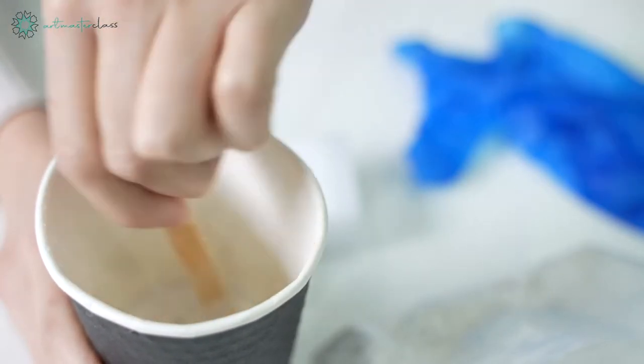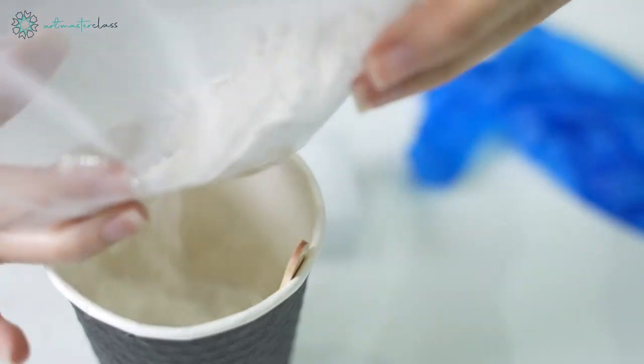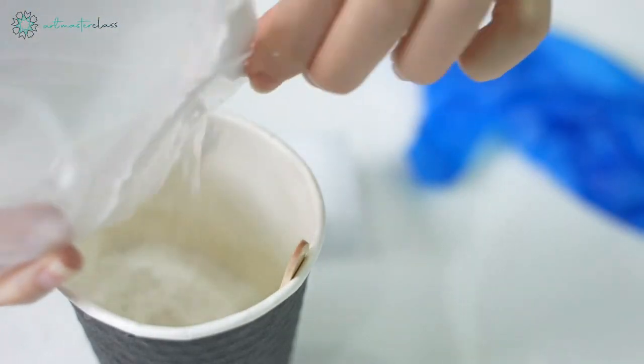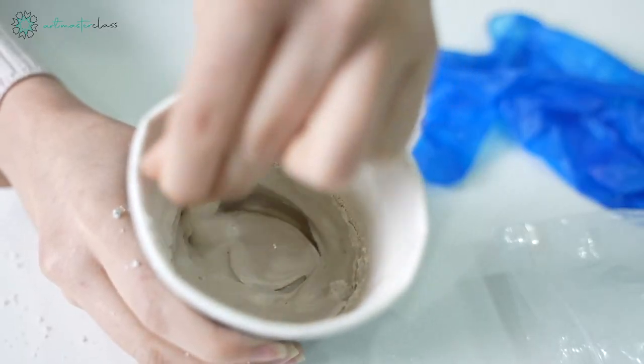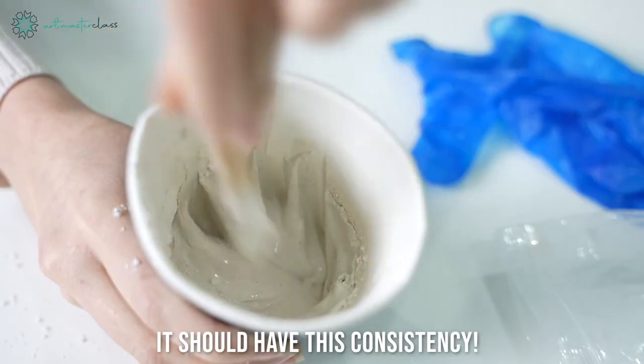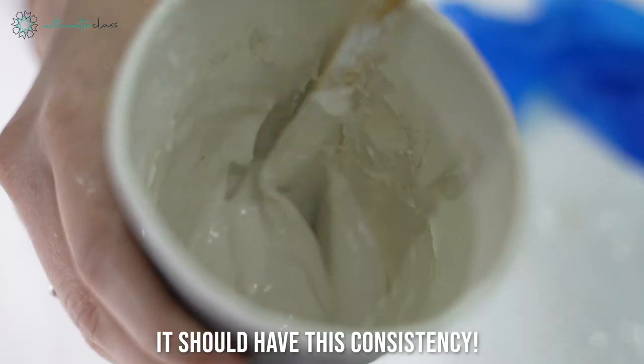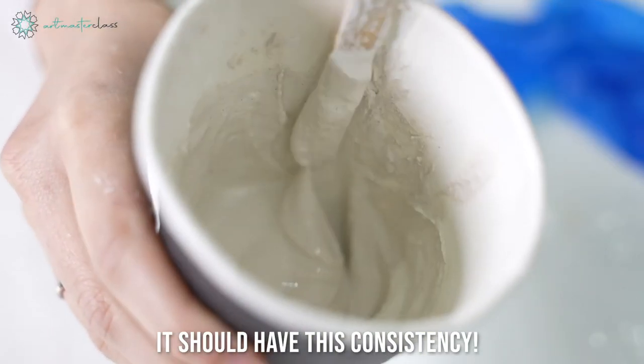Mix thoroughly and make sure there are no clumps in the mixture. This is the consistency that the plaster mixture should have. Now you are ready to apply the plaster on your glass globe.